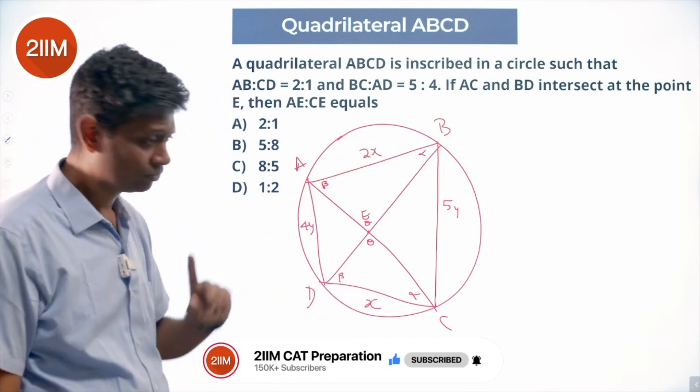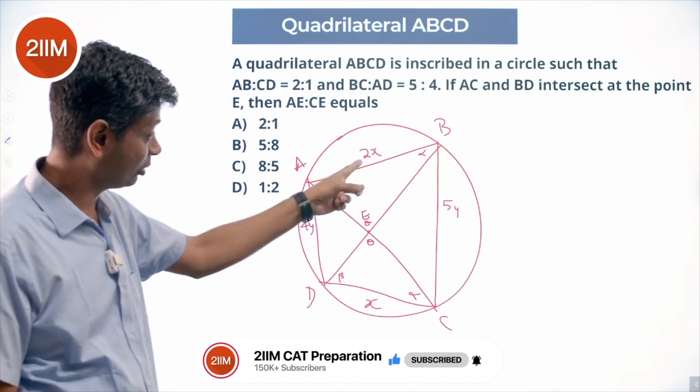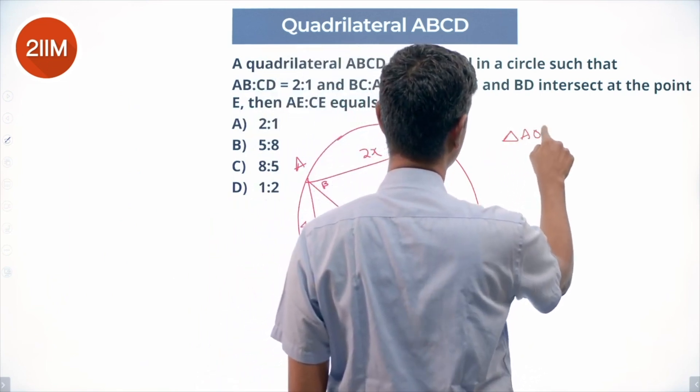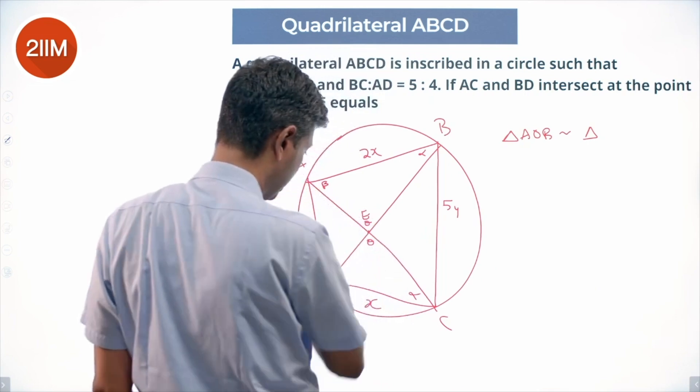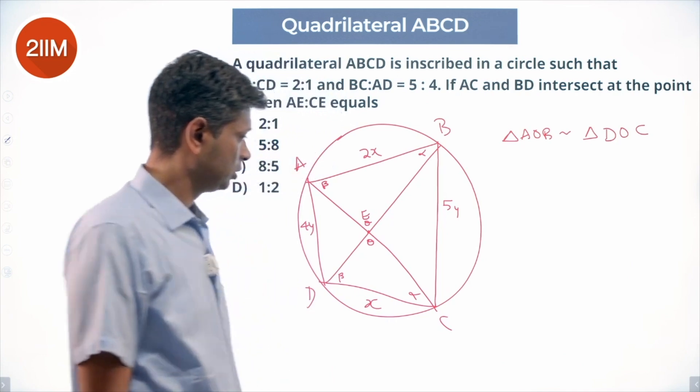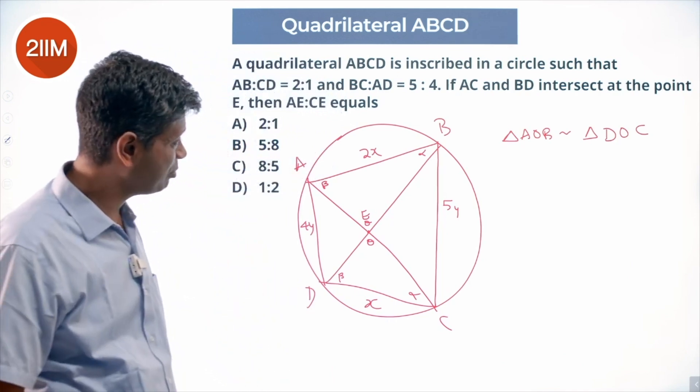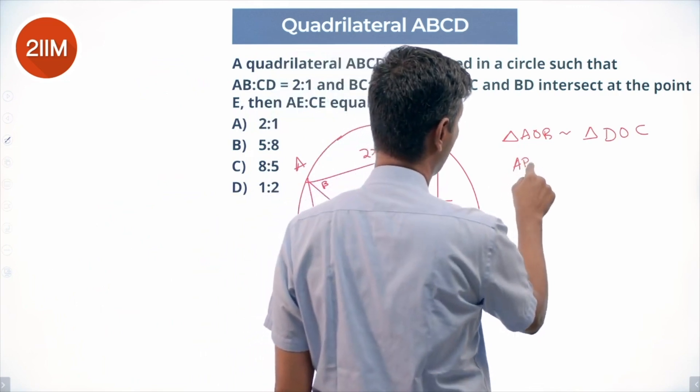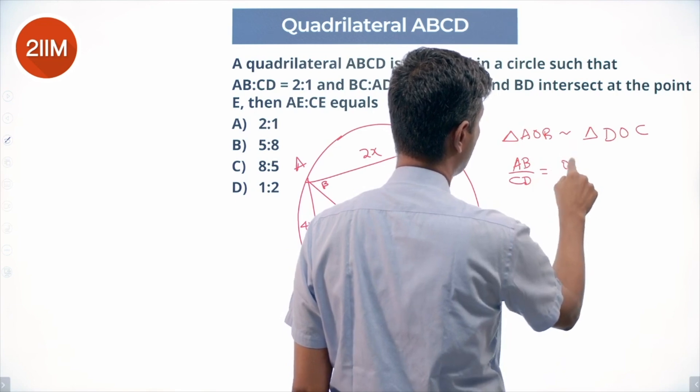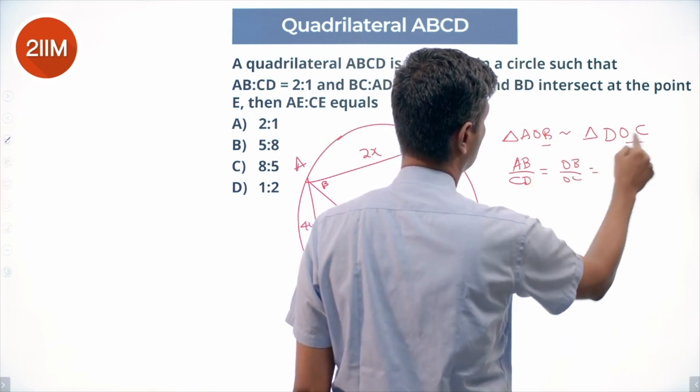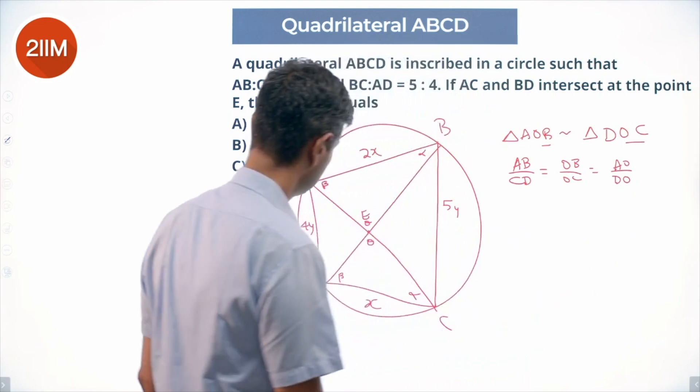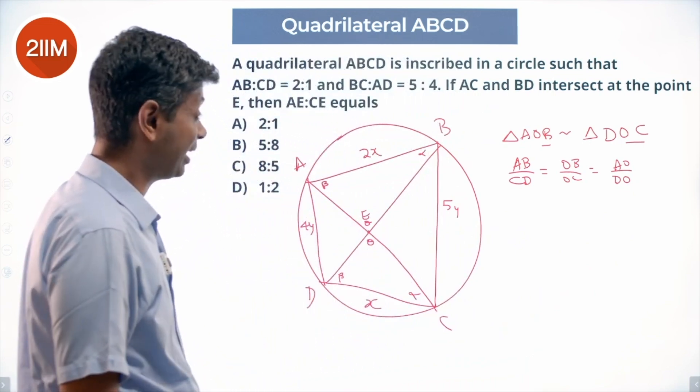We can say triangle AEB is similar to triangle DEC. From this, we know AB/CD = EB/EC = AE/DE. Let me mark this point as E, not O.